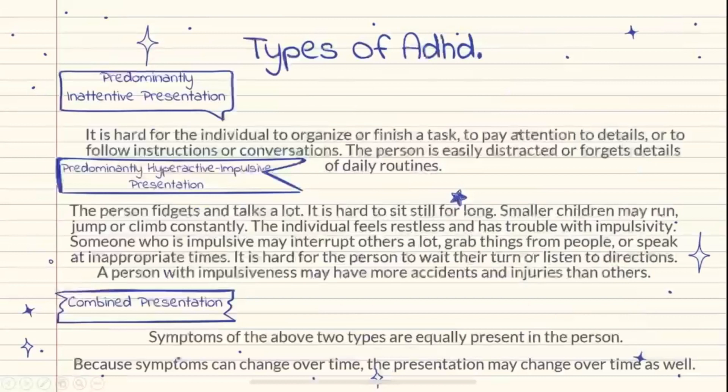The first type is characterized predominantly by inattention and distractibility without hyperactivity. The second type is the least common and is characterized by impulsive and hyperactive behaviors without inattention and distractibility. The third type is the most common and is characterized by impulsive and hyperactive behaviors as well as inattention and distractibility.